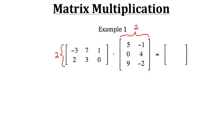Our resulting matrix will be a 2 by 2 matrix. Since the number of rows for our result is determined by our first matrix and the number of columns for our result is determined by our second matrix, we're going to do the multiplication by taking the rows from our first matrix and multiplying them by the columns in the second matrix.